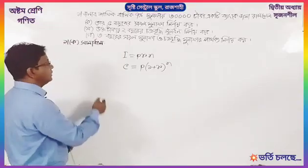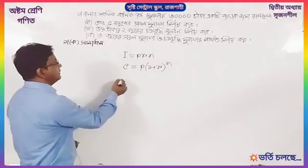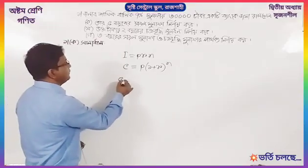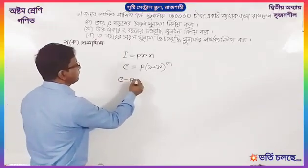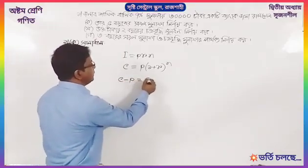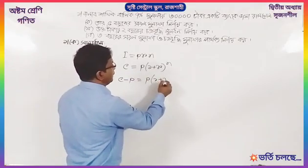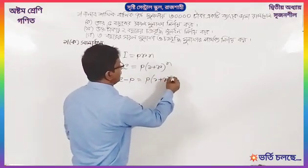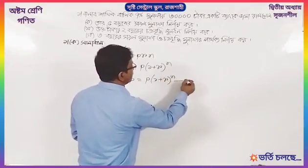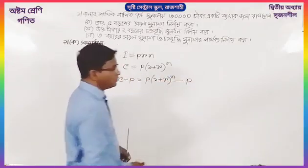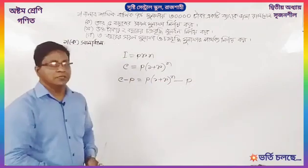The first formula is C minus P. C minus P, P into X jog R to the power N, divided by P. This is the first one.